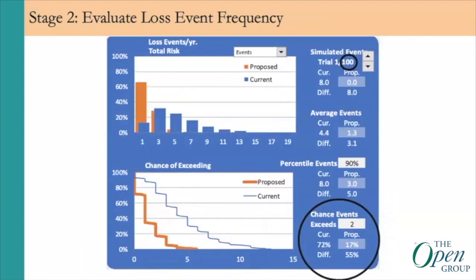Now we can see how that side produces results. This is the loss event frequency view of the analysis, showing 100 trials. Looking at two events per year as an interesting reference line: in the current scenario, there is a 72% probability of two or more events per year. With the proposed solution, there is only a 17% probability — a substantial reduction.